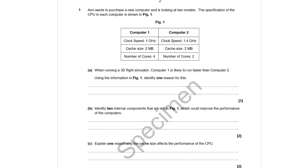Question 1 begins with Anne wanting to purchase a new computer. She's looking at two models — one CPU has a clock speed of 1 GHz, cache of 2 MB, and four cores; the other has a faster clock speed, the same cache, but only two cores. When running a 3D flight simulator, Computer 1 is likely to run faster — the only way it's better is in terms of cores.